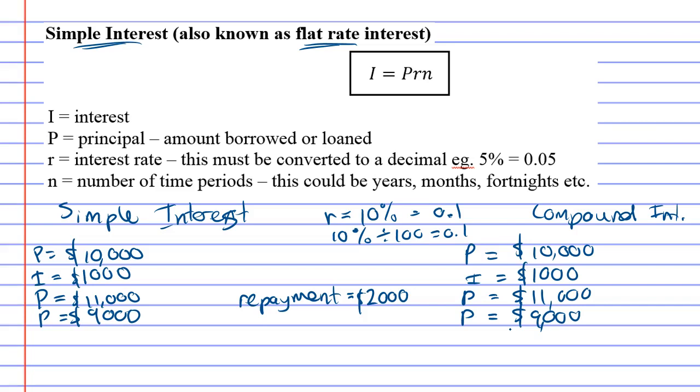What's going to happen next? The next year is going to come along and they're going to charge you ten percent again. Now if it was compound interest, when they charge you ten percent they're going to charge you ten percent of your new principal - your nine thousand dollars - which would be nine hundred dollars, which means you now owe nine thousand nine hundred. So what's happened is your interest has gone from one thousand dollars down to nine hundred. Your interest is decreasing which is a good thing.